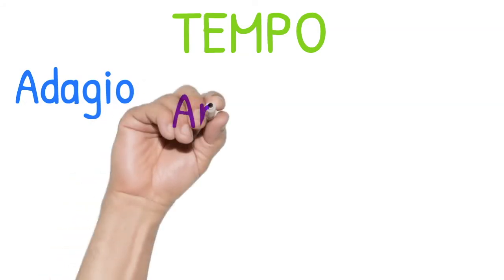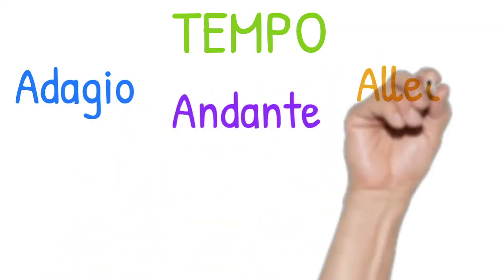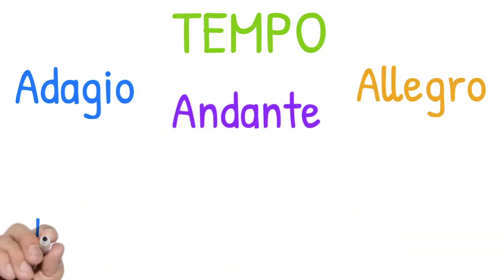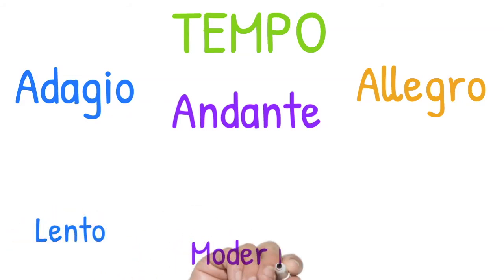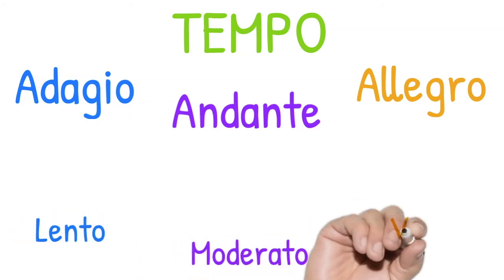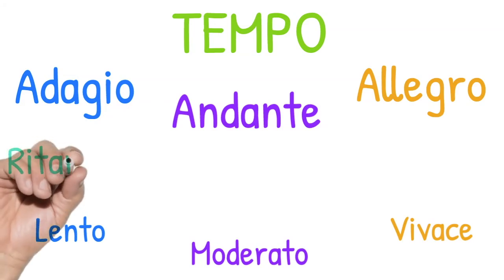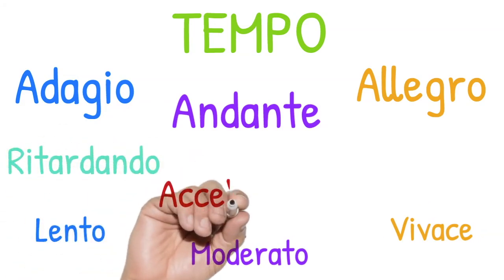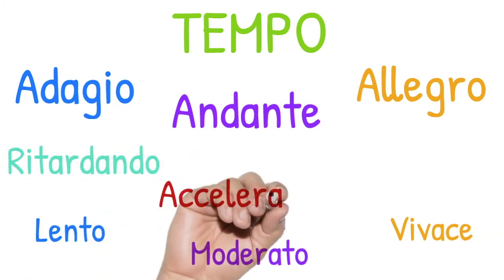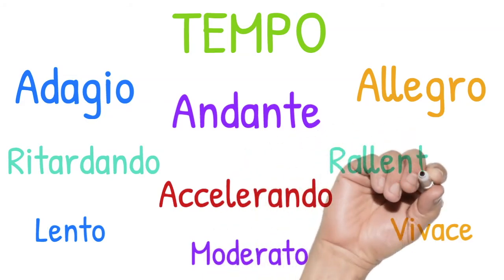There are many more intricate details that we could go into when talking about tempo. It doesn't simply tell you the scientific speed to play at, but it can also dictate the overall mood and style of how the music should be played. And that's down to you, as a musician, to interpret and communicate.